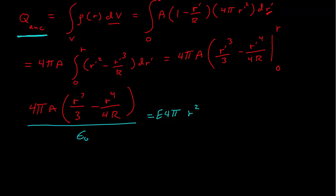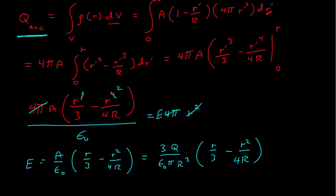So the 4 pi's cancel, and then I'm going to substitute in for A, and then the R squareds give me here's just an R, and that's an R squared, and so the electric field then is equal to A over epsilon naught times R over 3 minus R squared over 4R. Let's substitute in for A, get it in terms of our total charge, here we've got 3Q over epsilon naught pi capital R cubed.